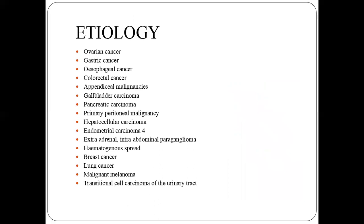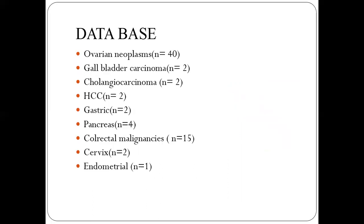There are various etiologies of malignancies arising from abdominal pelvic organs, and also extra-abdominal organs such as breast carcinoma, lungs, and malignant melanoma. Data from our study were contributed by ovarian neoplasm, gallbladder, cholangiocarcinoma, HCC, gastric, pancreatic, colorectal, cervical, and endometrial malignancies.